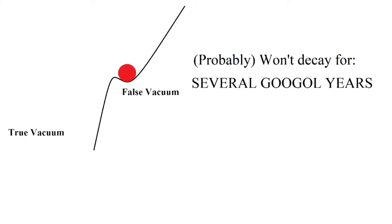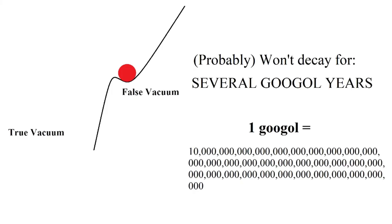Besides, if we do live in a false vacuum, the decay will probably not happen for Googols of years. Googol means 1 followed by 100 zeros. Although there are chances that the vacuum decays now, it's very very slim.